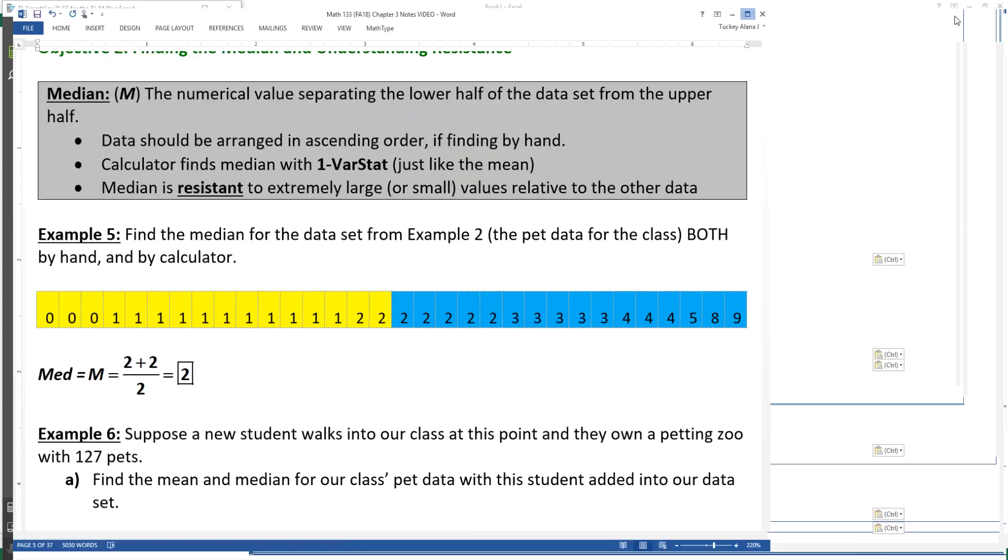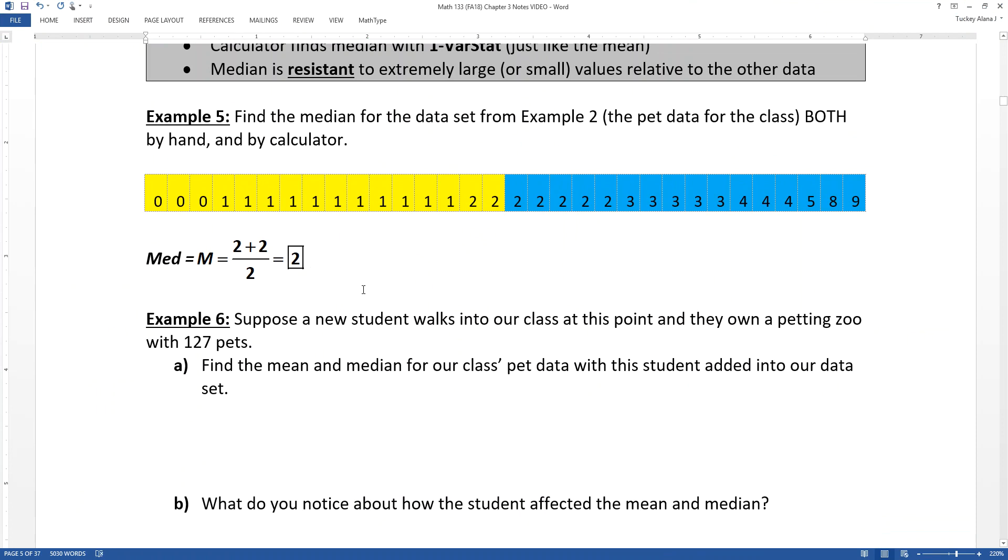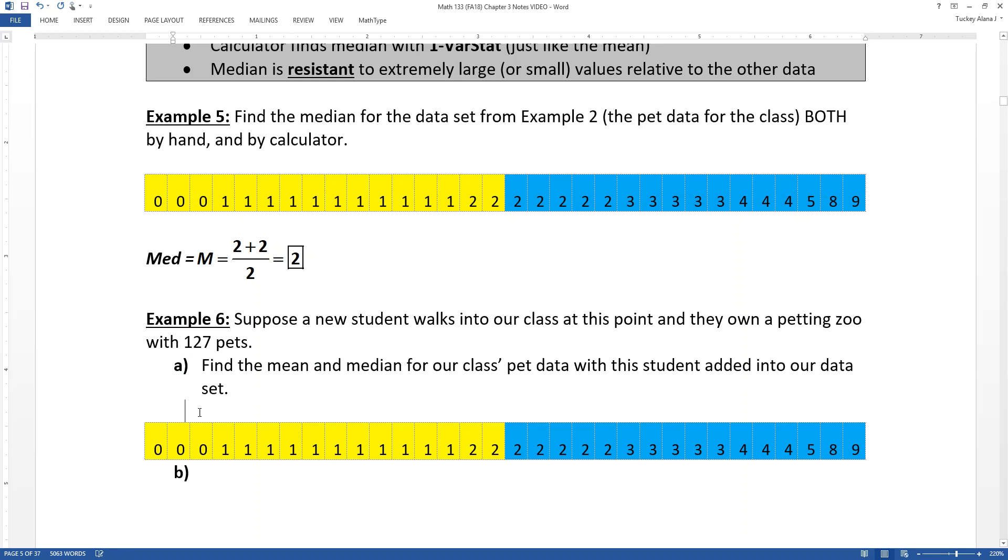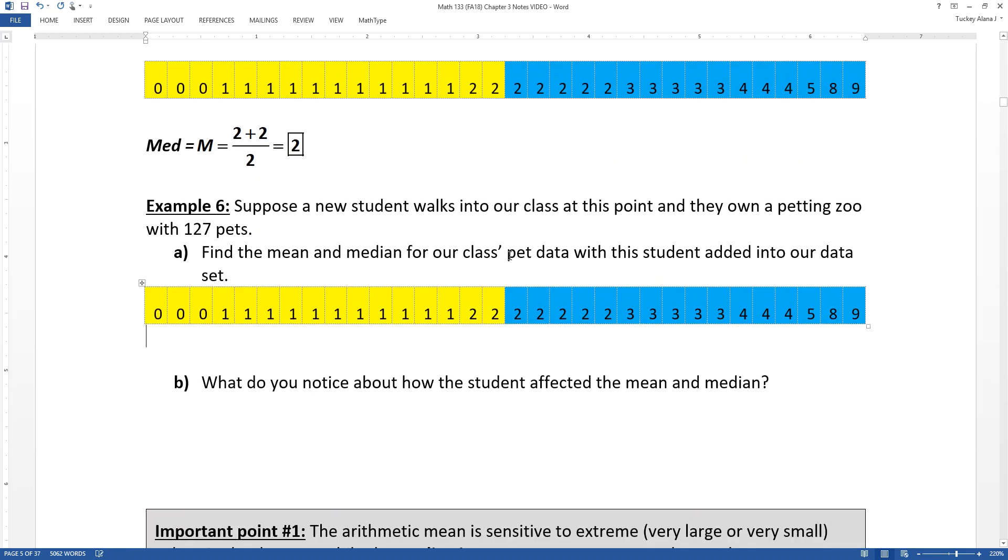So now let's think about how our data set would be affected if we did something rather drastic. A new student walks into our classroom, and they own a petting zoo with 127 pets. This is actually from a real-life example. We had a student, it's a long story, but basically for a science class, they had to create a tarantula farm. And so they had 127 tarantulas, which was rather astonishing. So this actually happened with a couple students in particular.